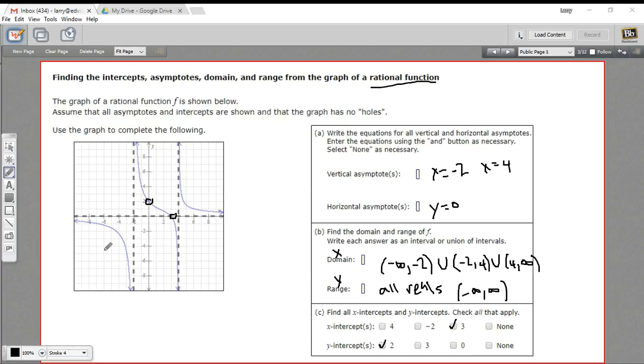So that is how to find the asymptotes, the domain and the range, and the intercepts of a rational function.